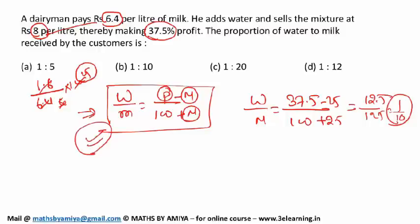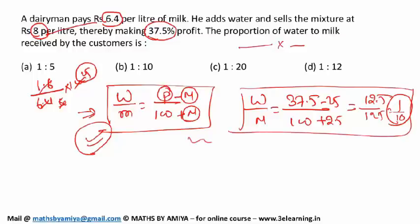This is one of the best methods to find water to milk solution or the profit or the markup or the discount if you have adulteration. This would take hardly 10 to 15 seconds. If you want to watch the complete concept video on this, I will suggest the link in the description.